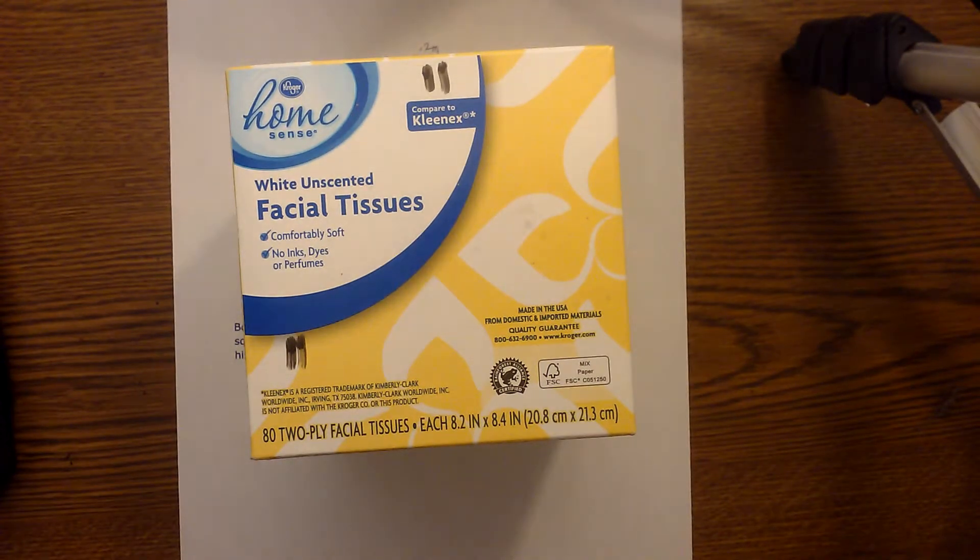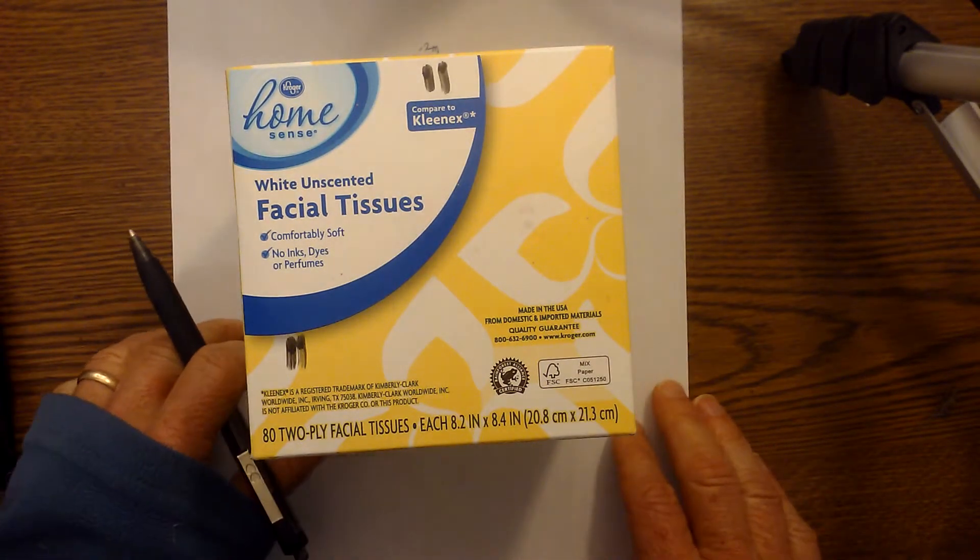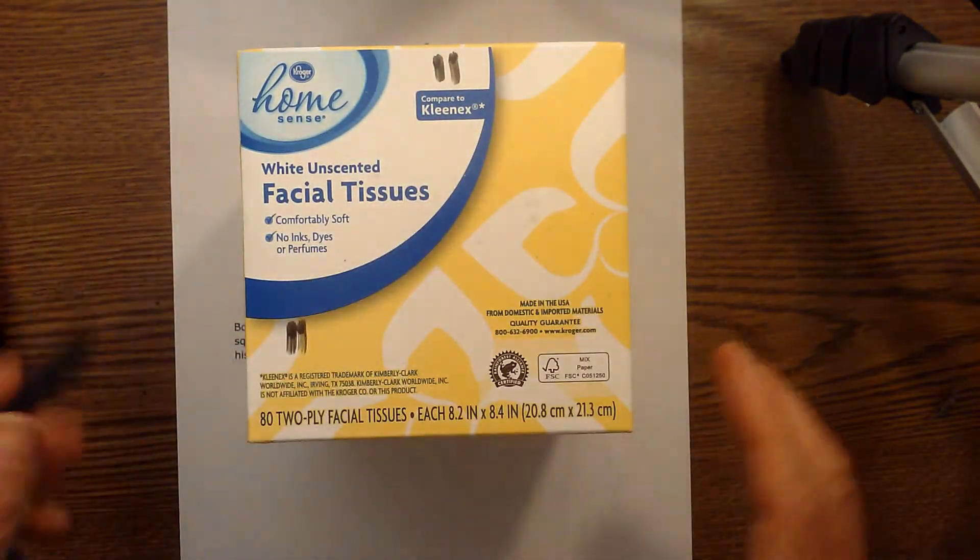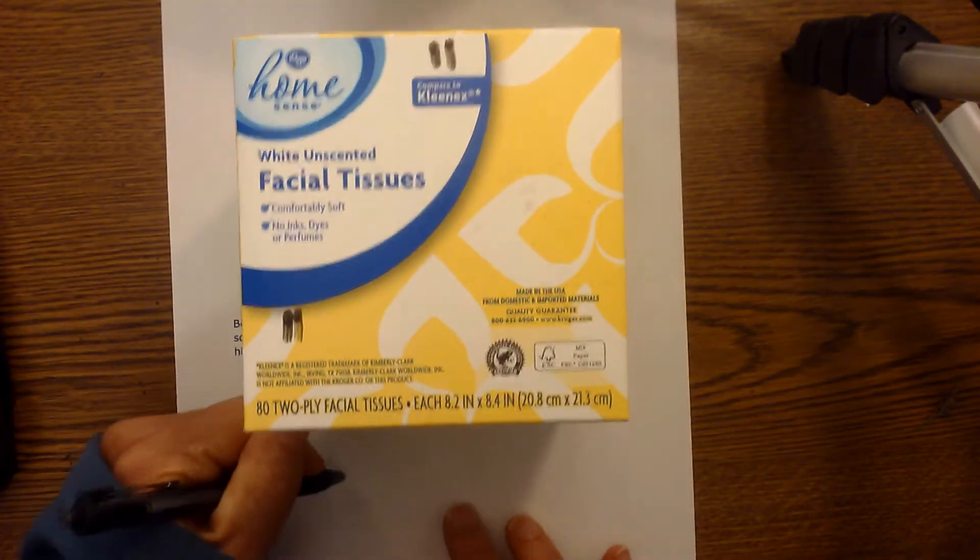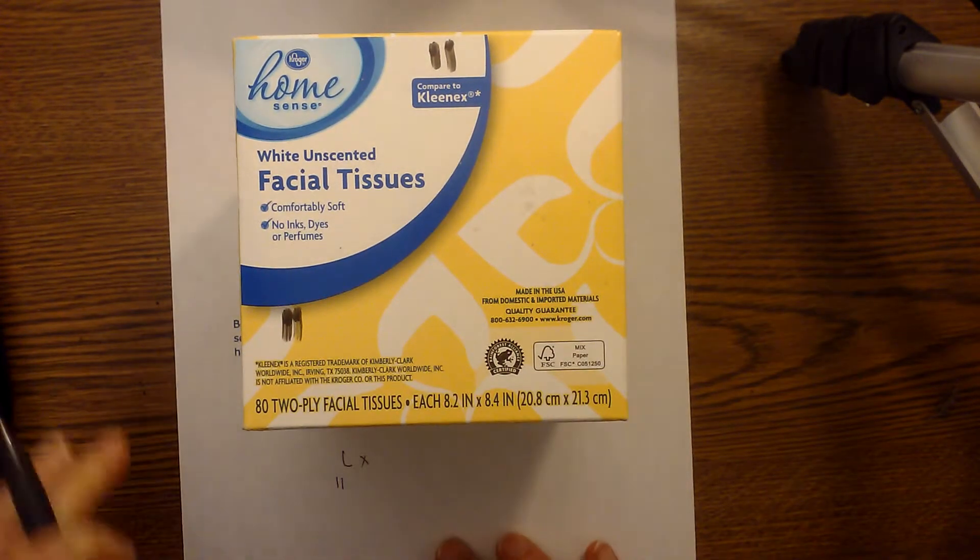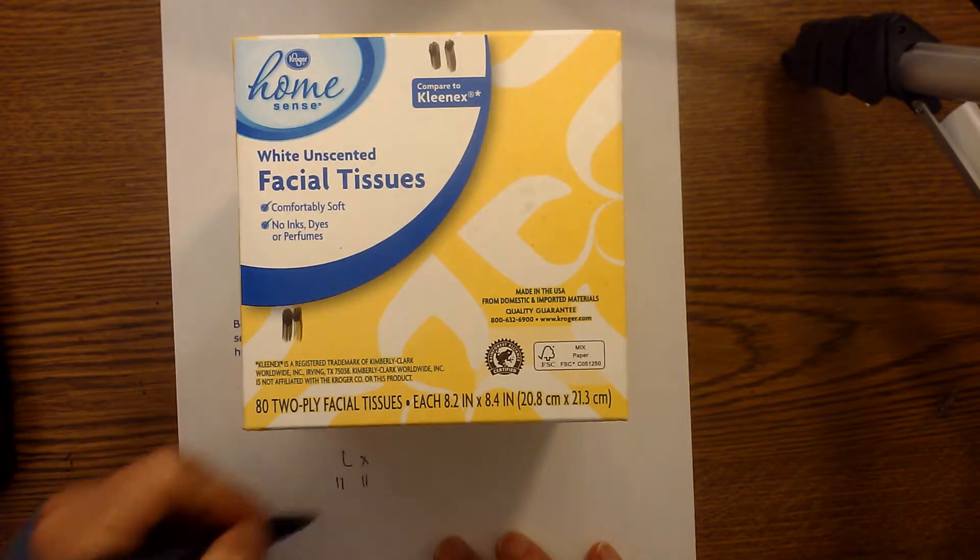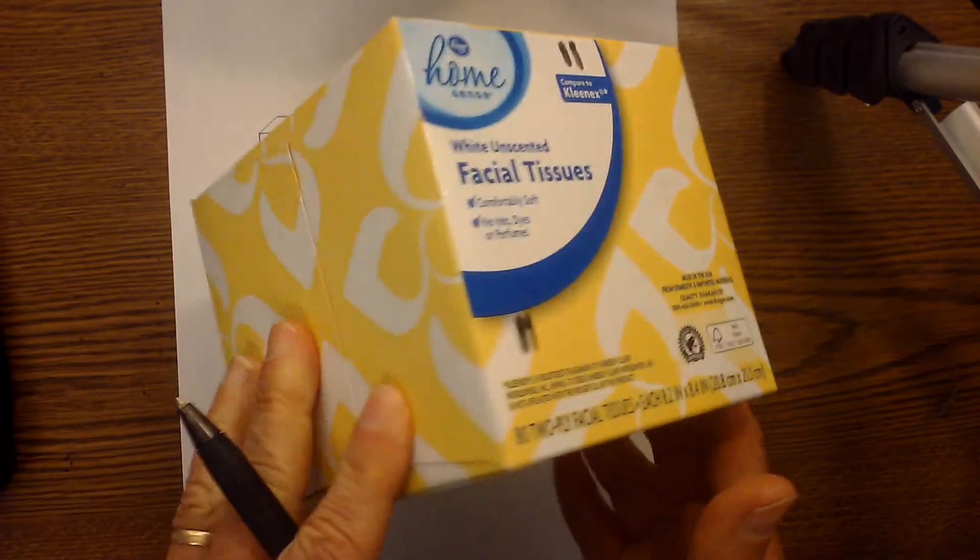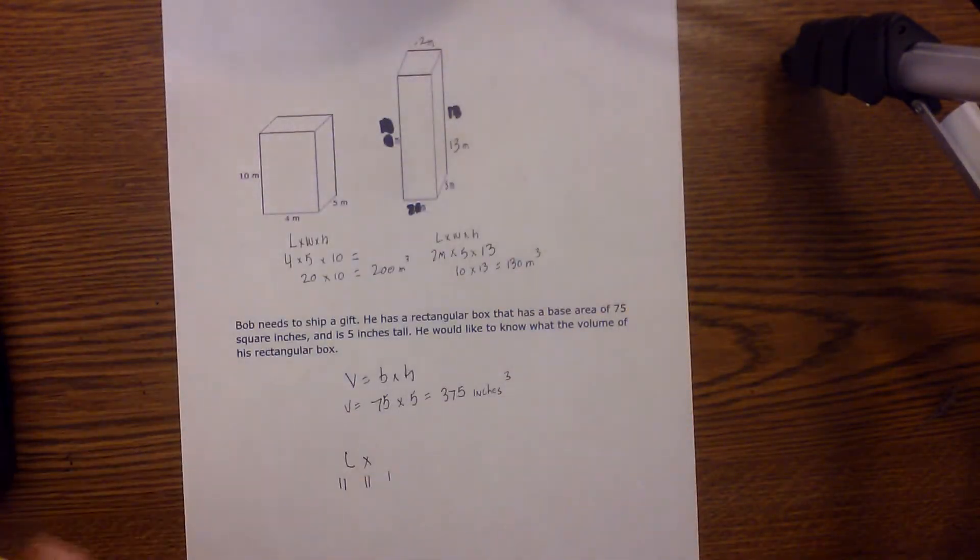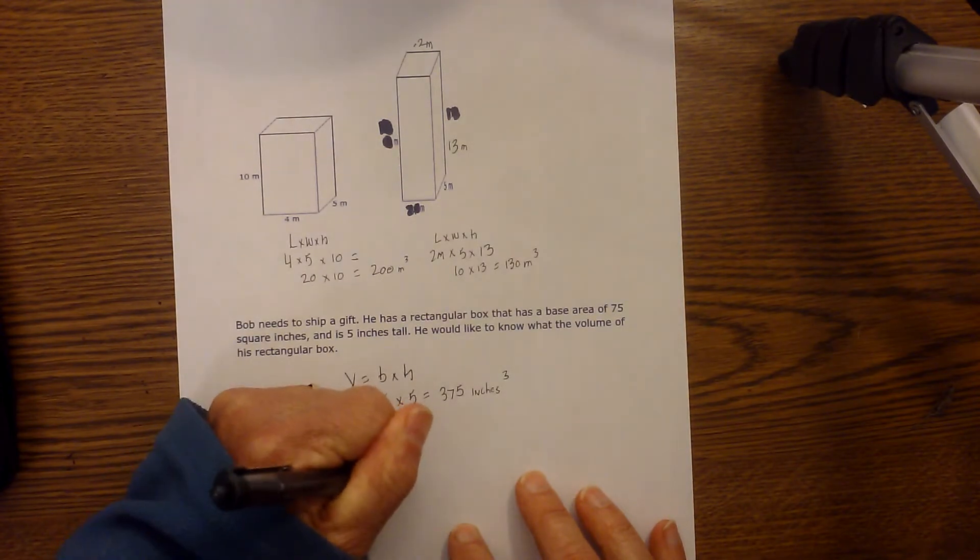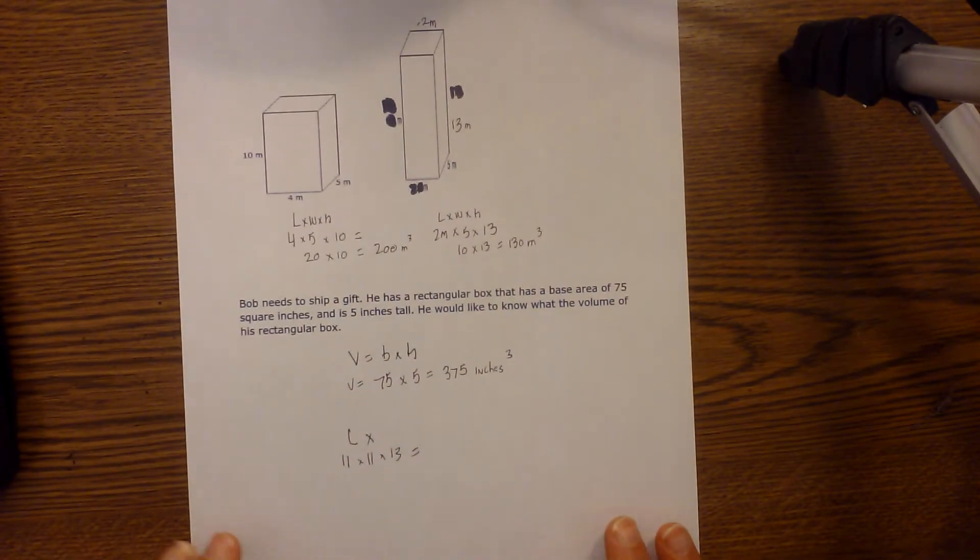And you just use the formula. And I went ahead and pre-measured it. So if you measure the length, you're going to get 11. The length is 11, and the width is also 11. And then the height I measured, and that was 13. So you have 11 times 11 times 13.